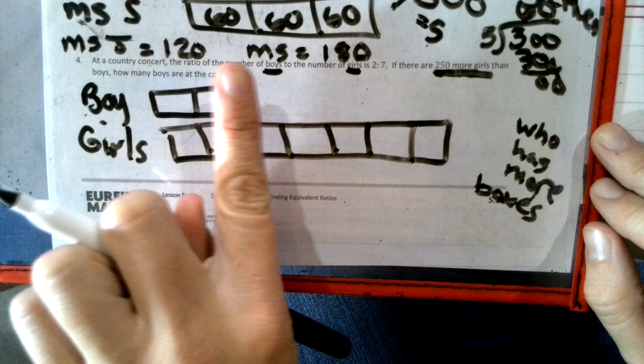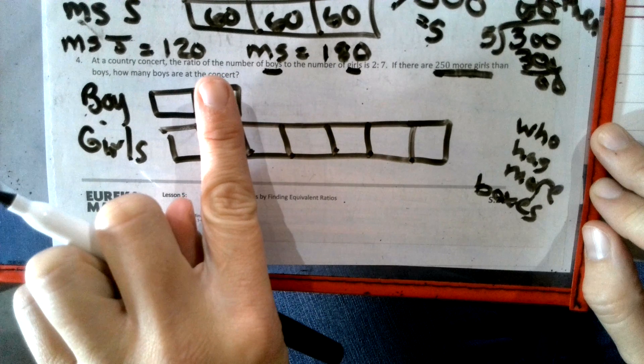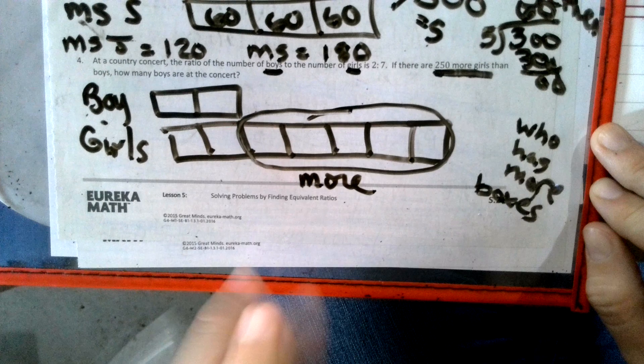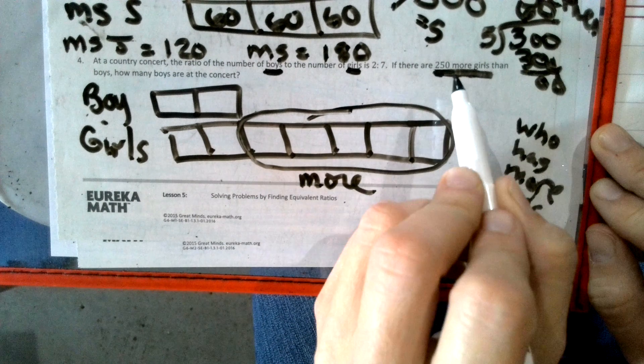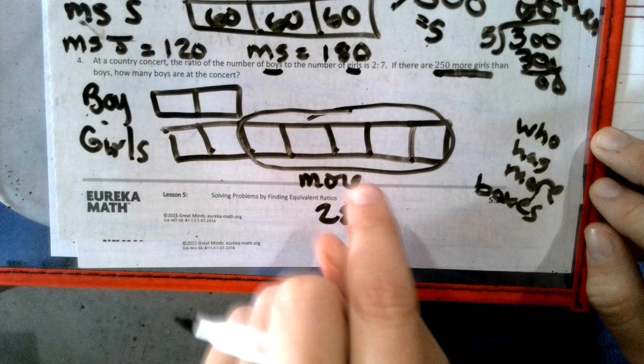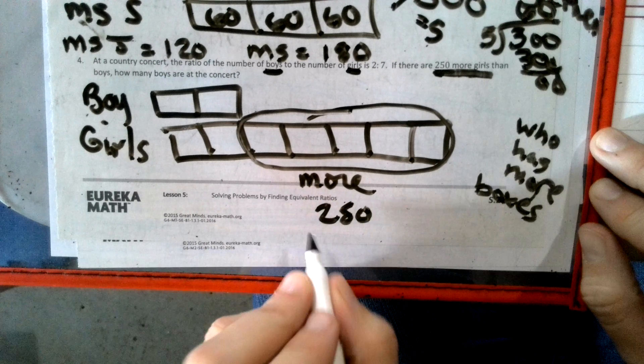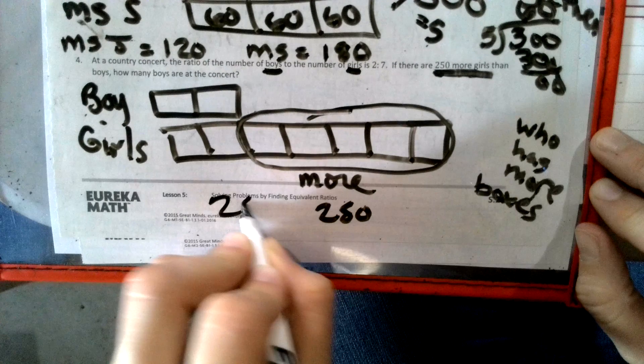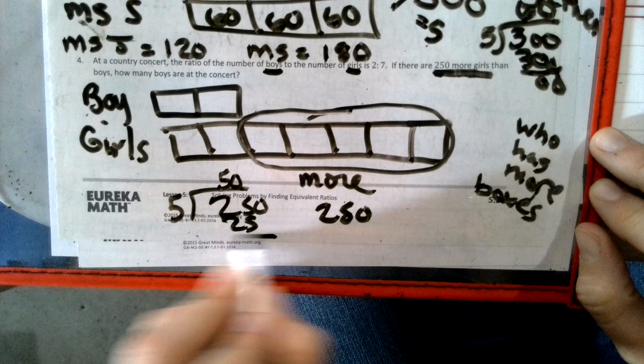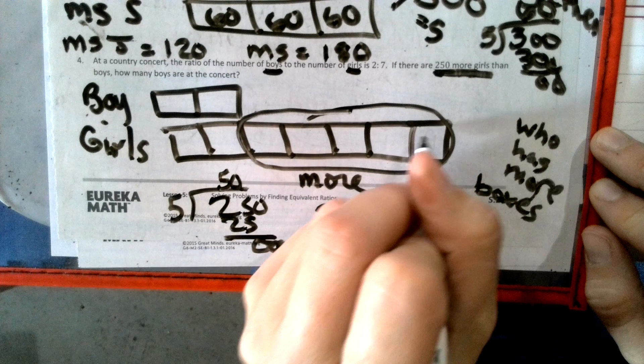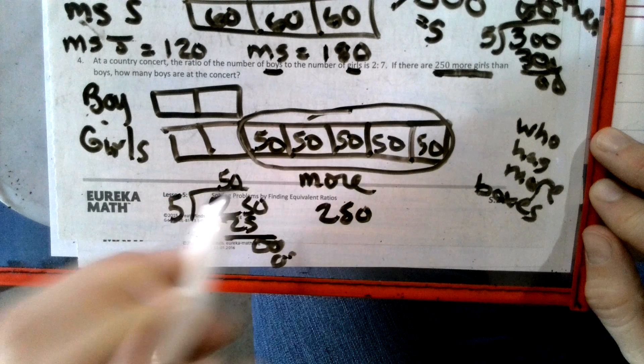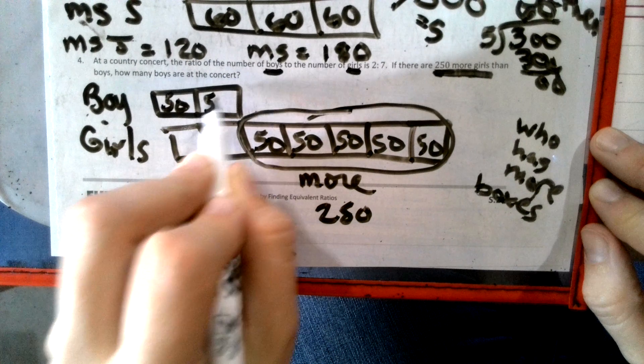So all those girl boxes, five of them, is the more number. More. So what's our more number? 250 is our more. We got to put 250 into those boxes. So how many boxes are we dividing that up into? Five. So we have to take 250 and split it amongst five boxes. That means we're putting 50 in each box. So 50, 100, 150, 200, 250. Every box gets 50.